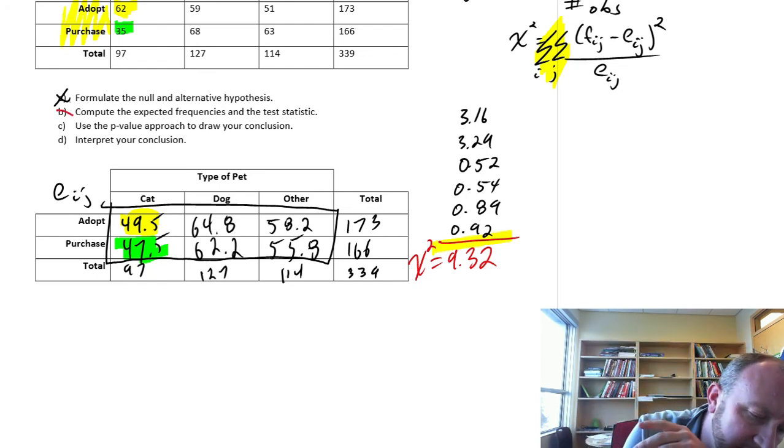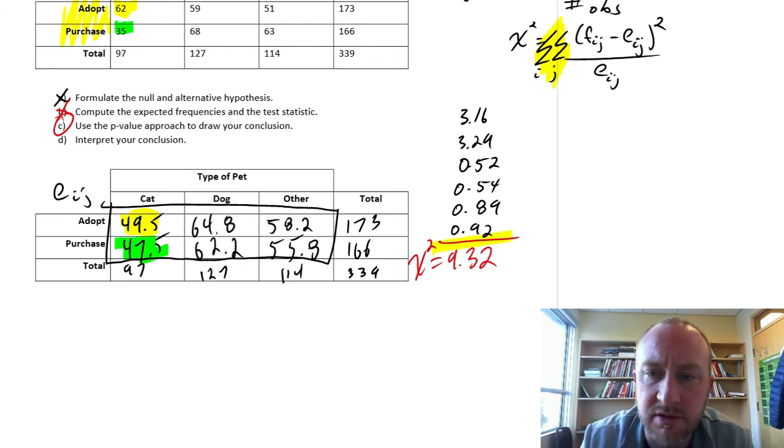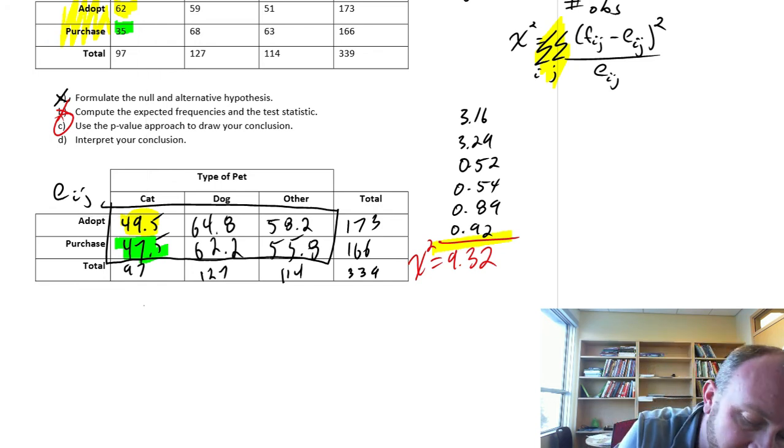So that is our chi-squared, 9.32. Now, we've got this one done. Let's do part C, p-value and conclusion. So we need to know, of course, what kind of a distribution are we working with.